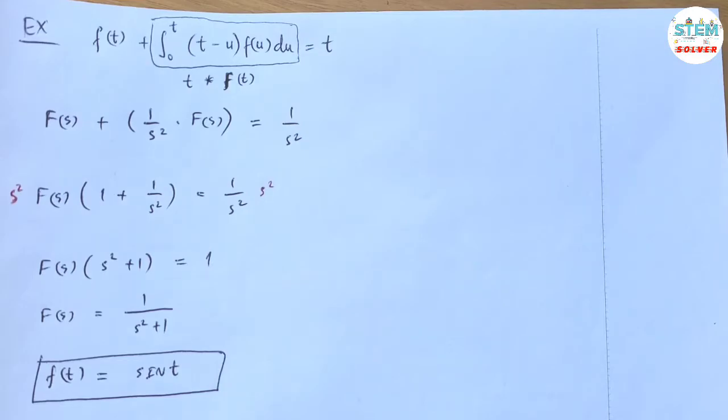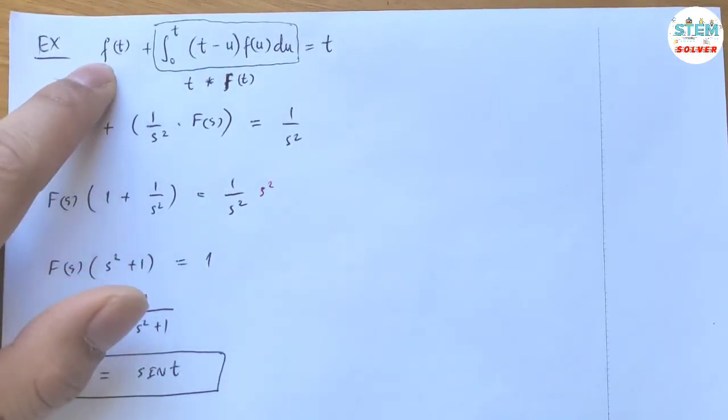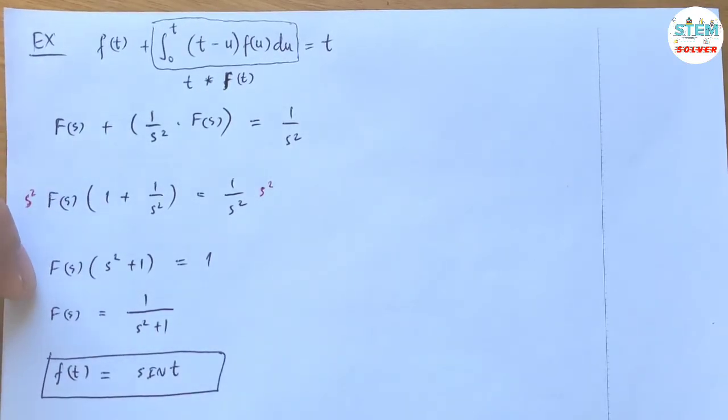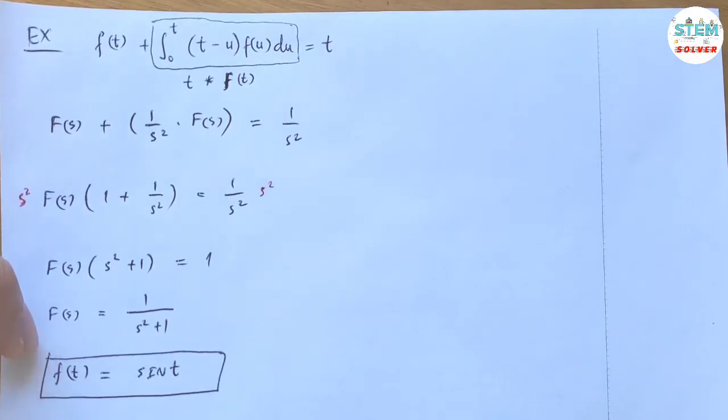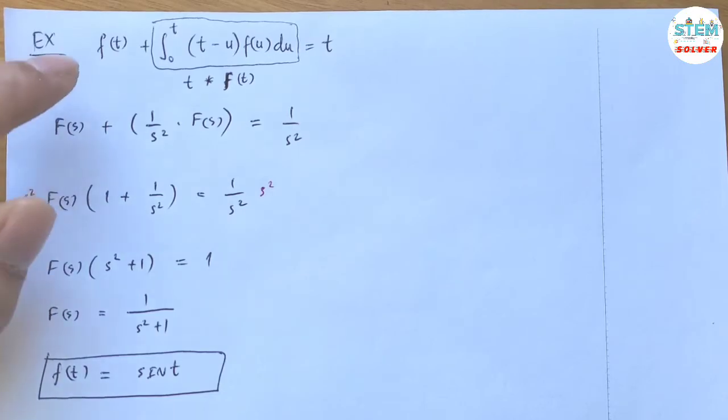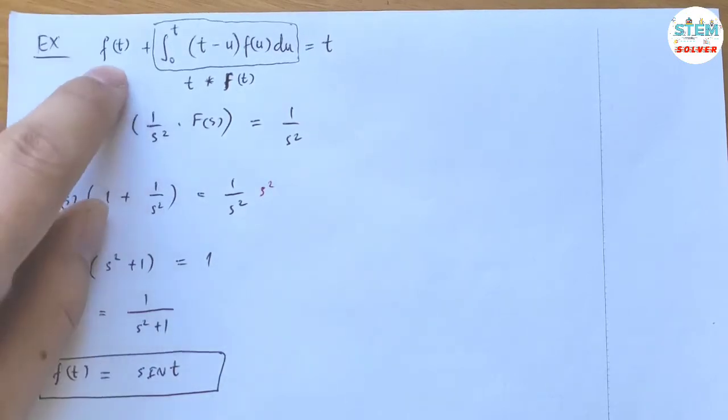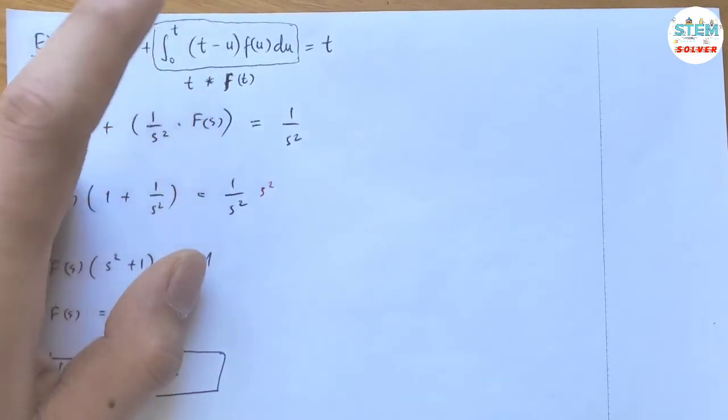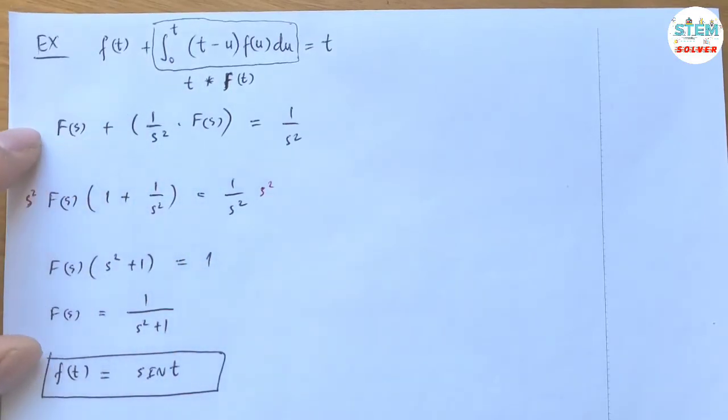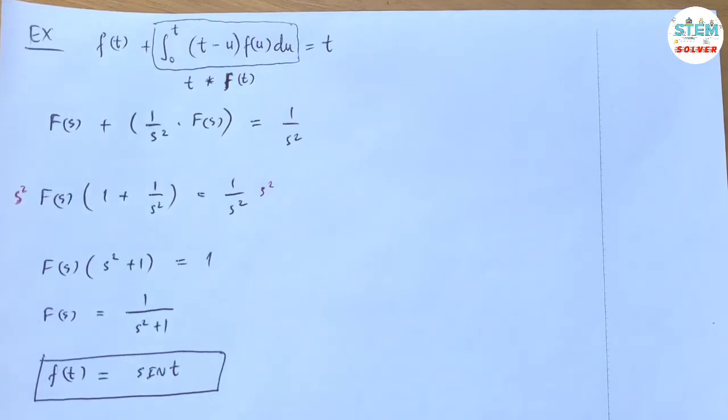So as you can see, we went from t, from this world to another world, and then we solved it in another world, then we went back to this world. It's easier to do it this way instead of finding what f(t) is used after using the integral here. So this is the benefit of using the Laplace transform. Hope it makes sense.